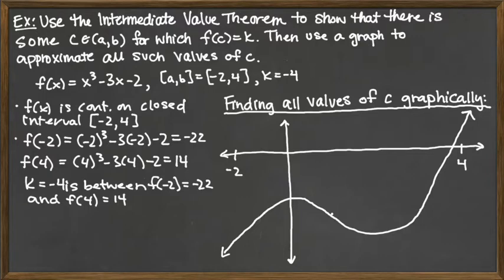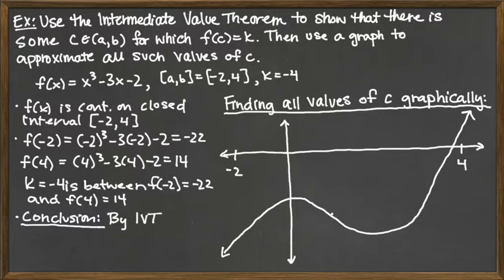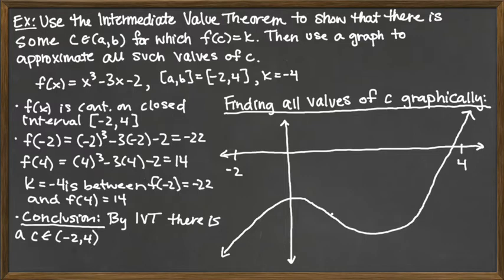Since f was continuous on a closed interval and K was between the function values, we're ready for our conclusion. The conclusion follows immediately once we've noted those two things. By the Intermediate Value Theorem (IVT), there is a C in the open interval negative 2 to 4 such that f(C) is equal to K, and that K given was negative 4.